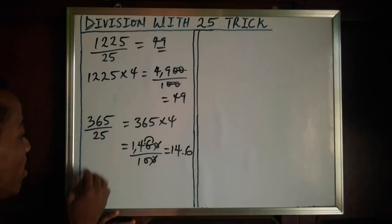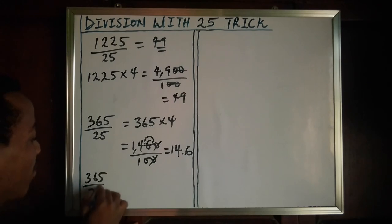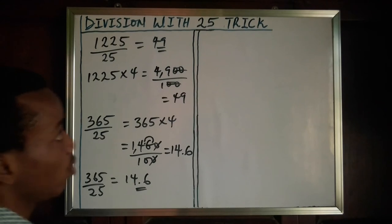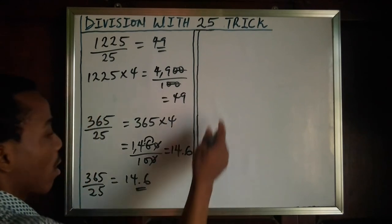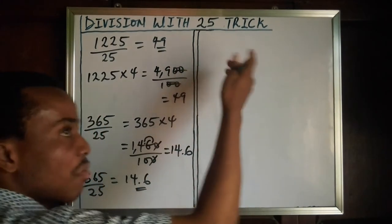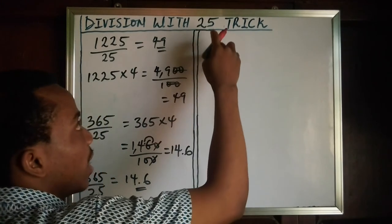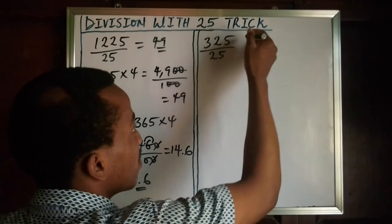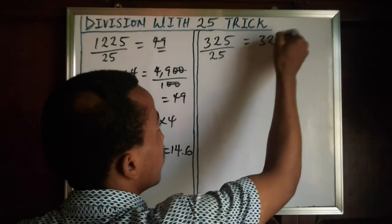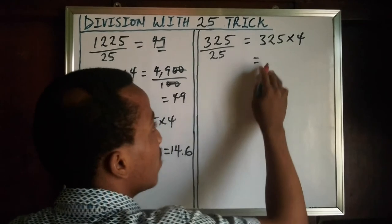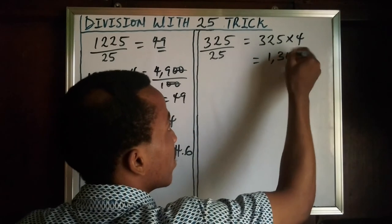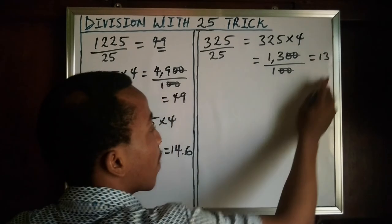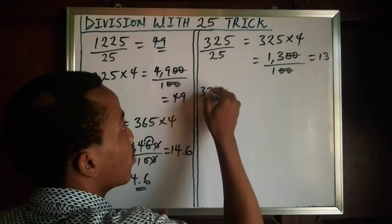All right, let's take one more problem before I give you an assignment. Let's assume you have 325 divided by 25. You still multiply by 4. So 325 multiplied by 4, what would this give? This gives 1300. So you divide the value by 100. The answer is 13. So the answer to 325 divided by 25 is 13.